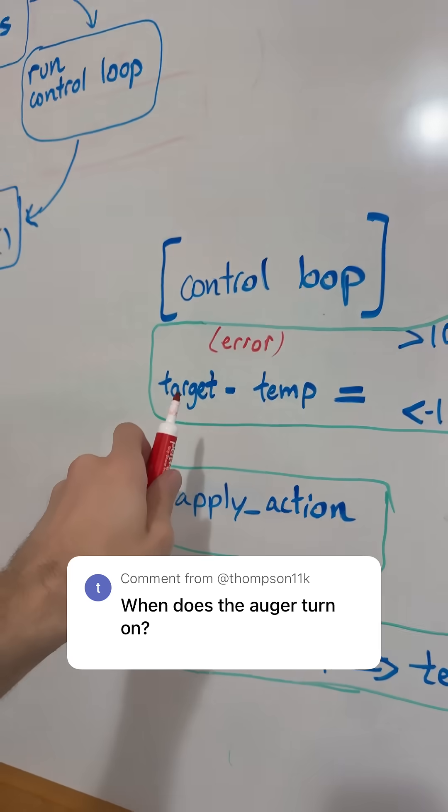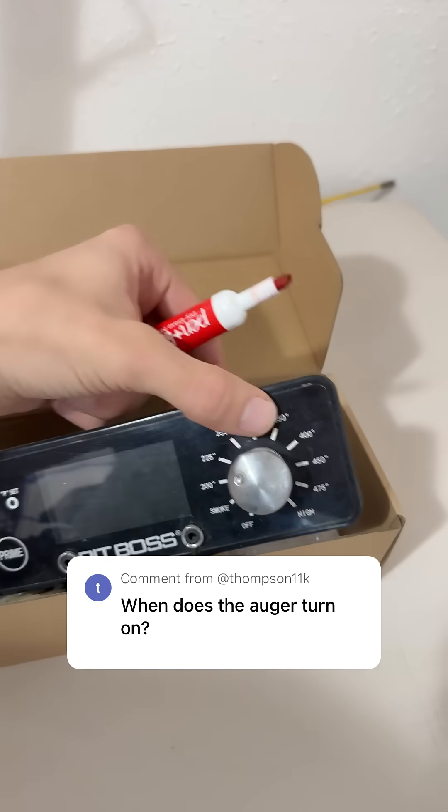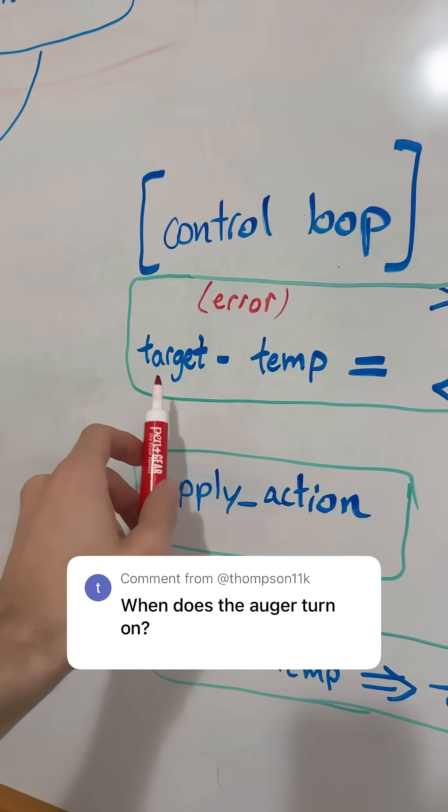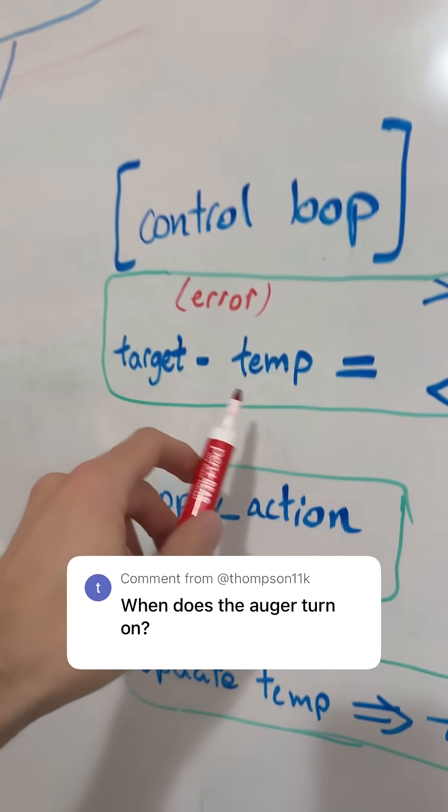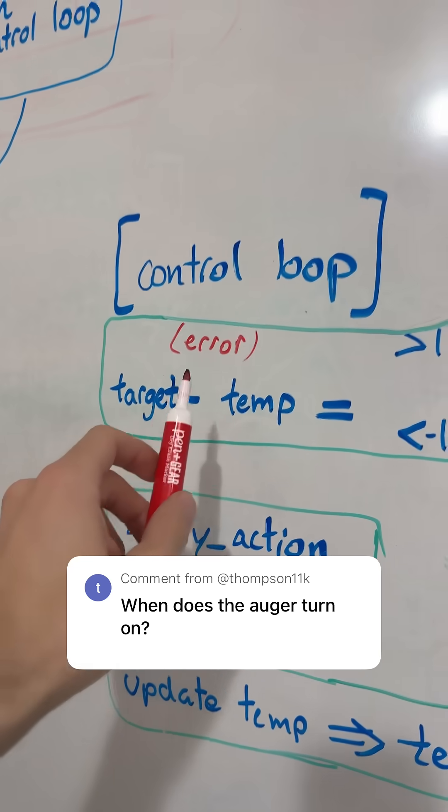The target temperature comes from one of these inputs. We read which value the user selected, like 300 degrees. The target of 300 minus the current temperature of 250 is the error, so that is 50 degrees positive.